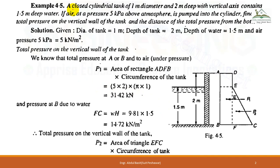The tank has a one meter diameter, so the circumference can be determined by 2πr or πd. The depth h is two meters, and 1.5 meters is the depth of water, so the remaining part is filled with air.